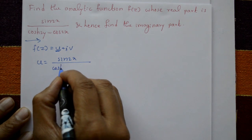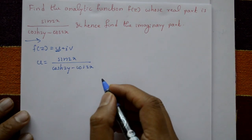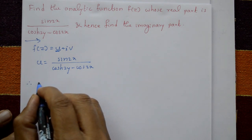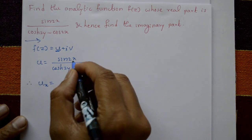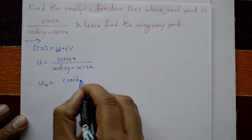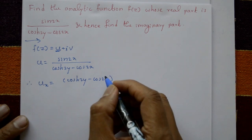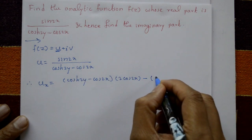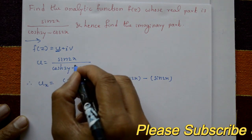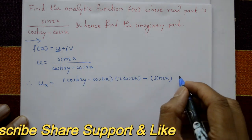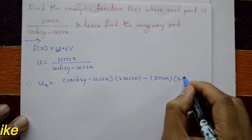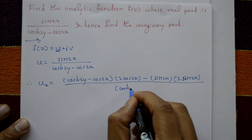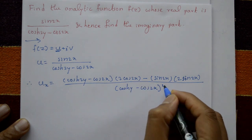Differentiate u with respect to x and y partially. For ∂u/∂x, using the quotient rule: denominator is (cosh(2y) - cos(2x)). Differentiating the numerator: sin(2x) gives 2cos(2x). Minus sin(2x) times the derivative of denominator with respect to x: 0 - (-2sin(2x)) = 2sin(2x). Divided by (cosh(2y) - cos(2x))².